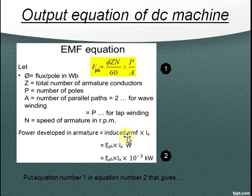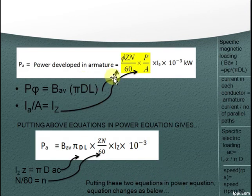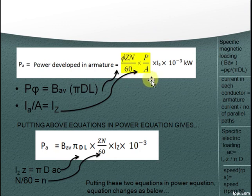Then power developed in armature equal to induced emf into Ia, equal to Eph into Ia watts. Multiply it with 10 raised to minus 3 to convert it to kilowatt. Put equation number 1 in equation number 2, that gives power developed in armature Pa equal to phi ZN by 60 into P by A into Ia into 10 raised to minus 3.